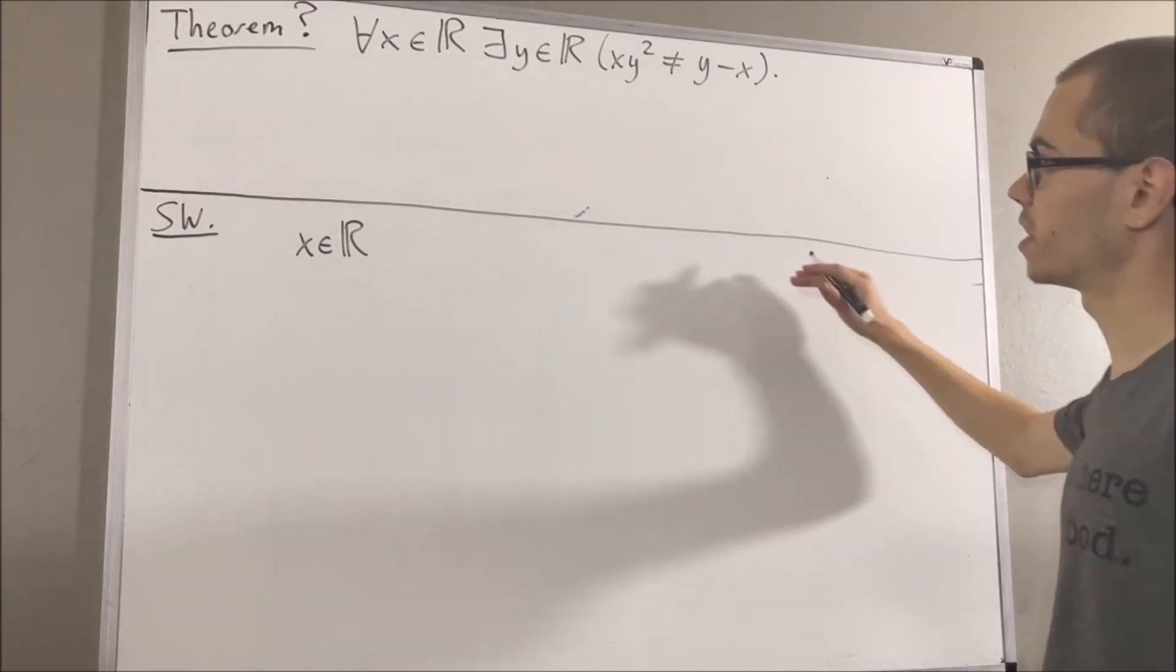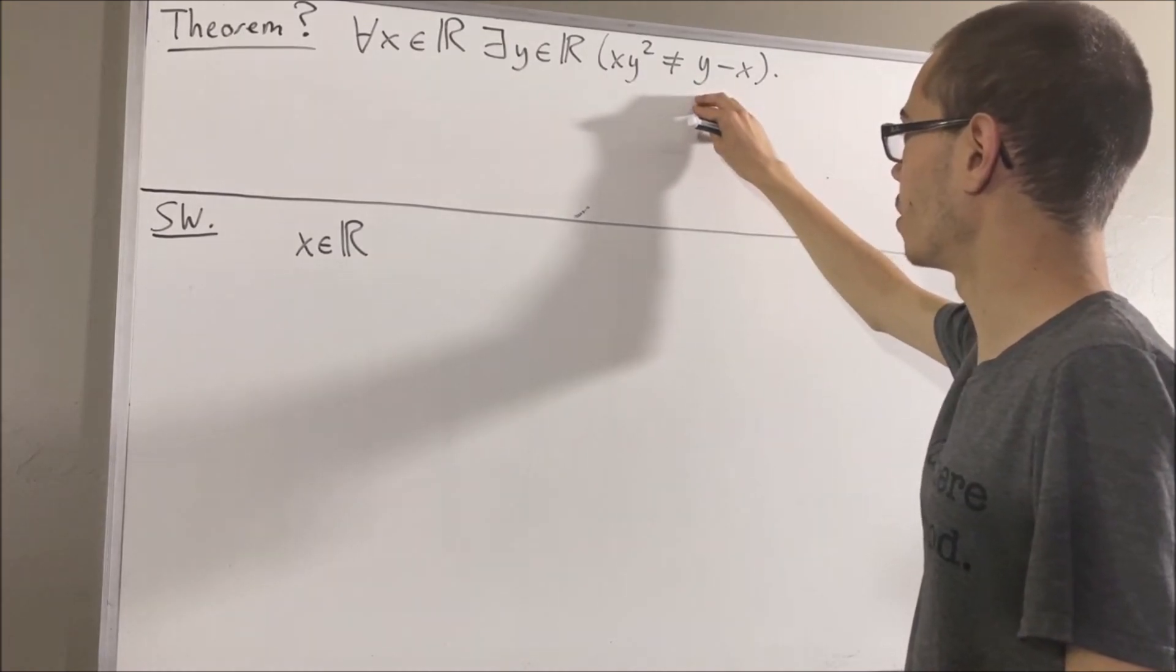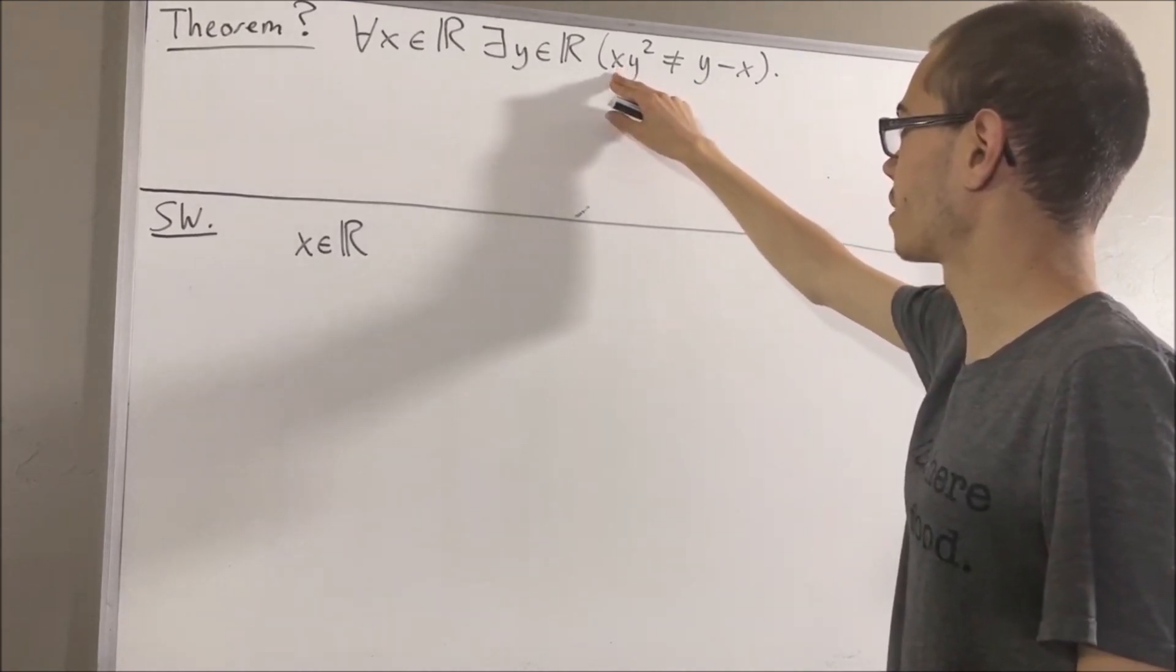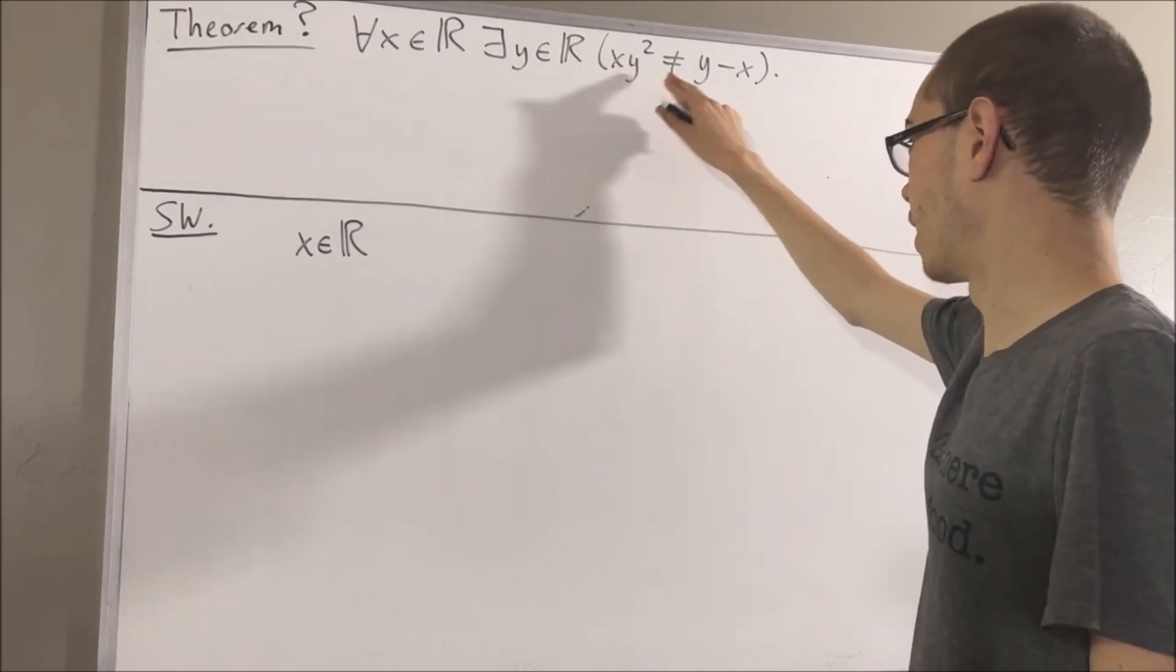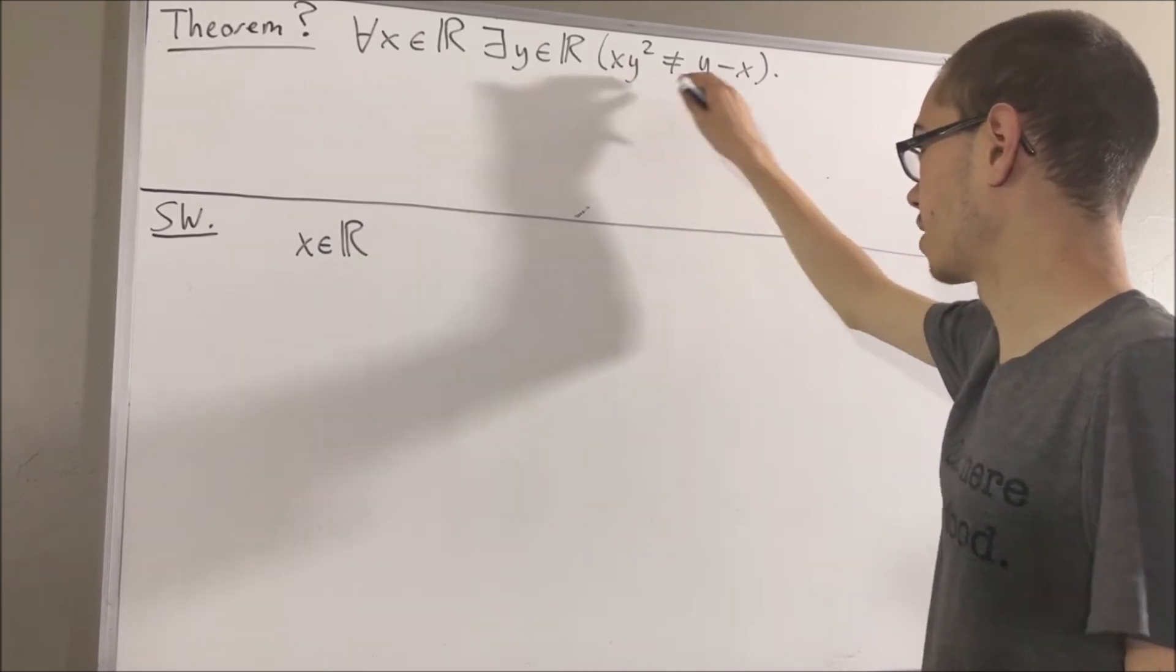Okay, my gut instinct is to say one, because if we choose one, then we're going to have x times one and one minus x, which gives us x and one minus x.